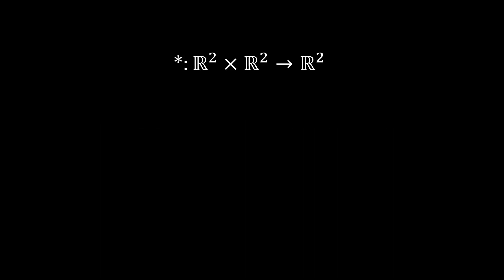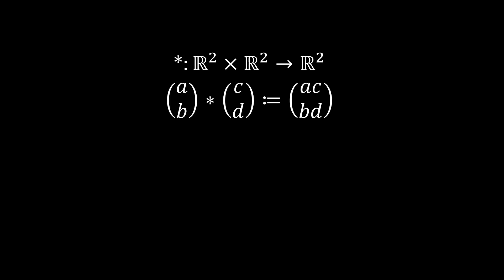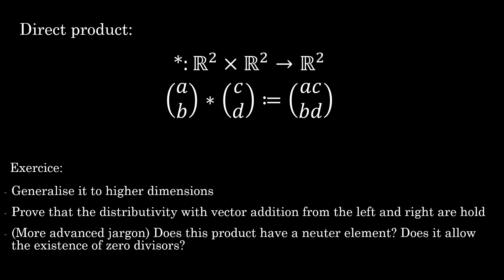Now that we know what a product is, let's create some. Can we define a multiplication on 2D vectors that returns another 2D vector? Yes, no problem. Here's an example: we take the vectors (a,b) and (c,d) from ℝ², and we define the product as the vector (ac, bd). Let's call it the direct product. I'll leave it to you to generalize it to higher dimensions and to prove it is distributive over vector addition.